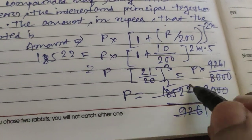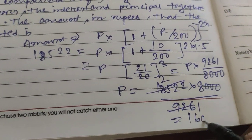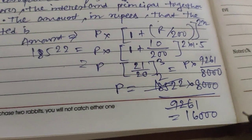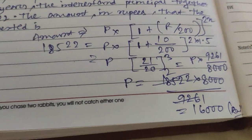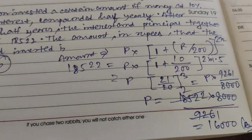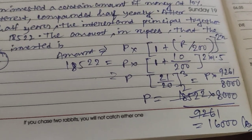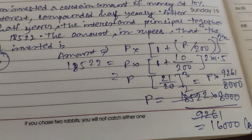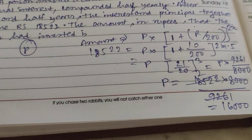9,261 goes into 18,522, so this will become 16,000. This will be your answer. The person has invested 16,000 rupees.